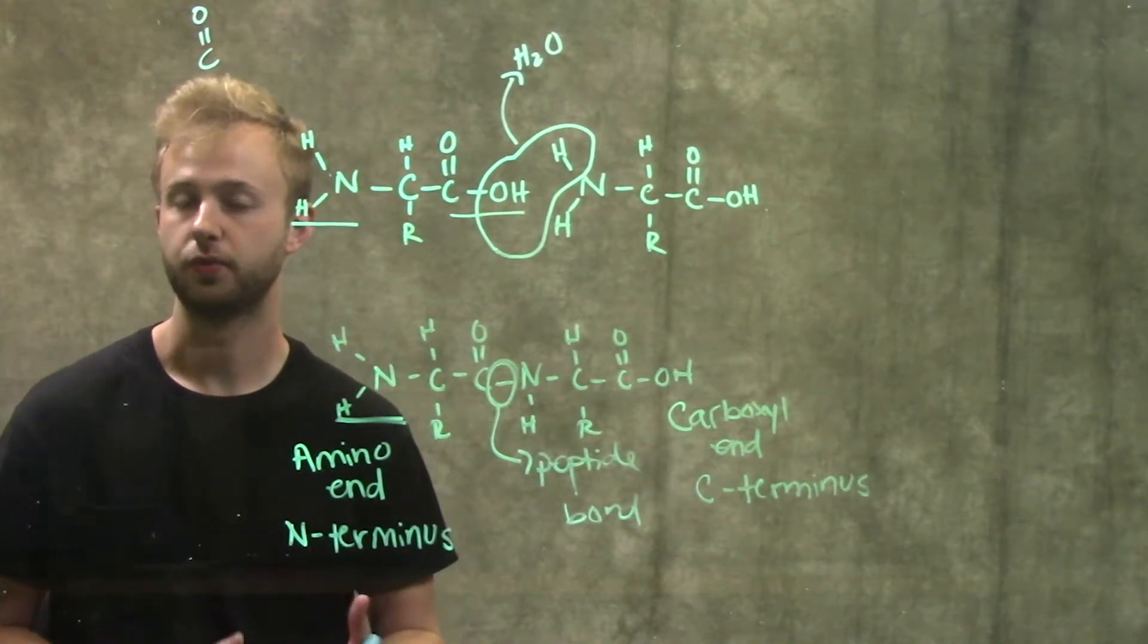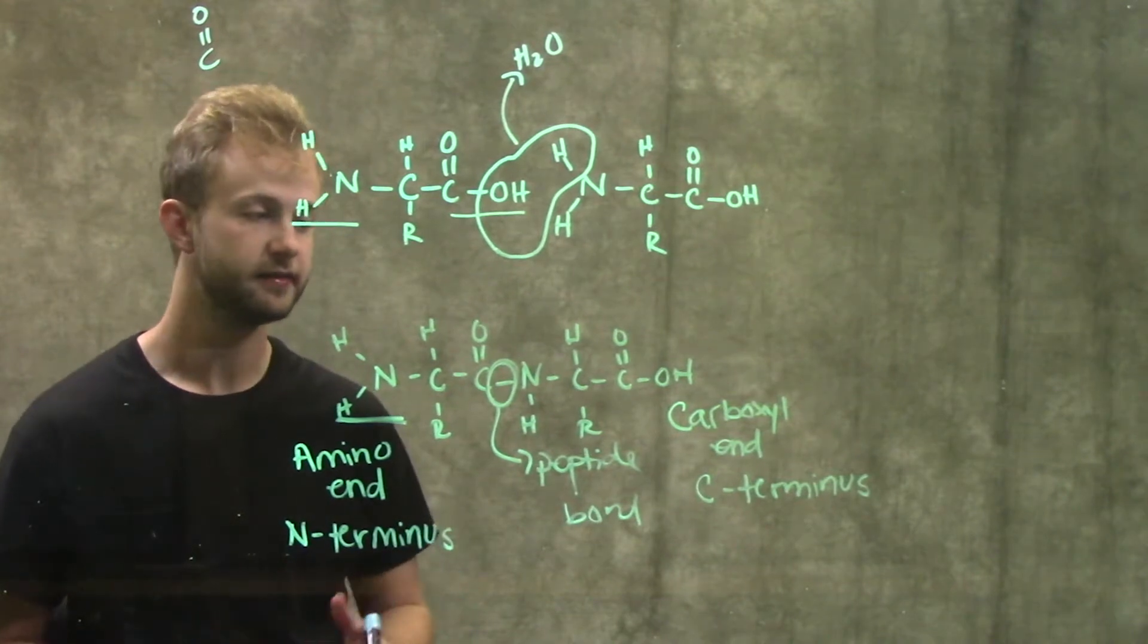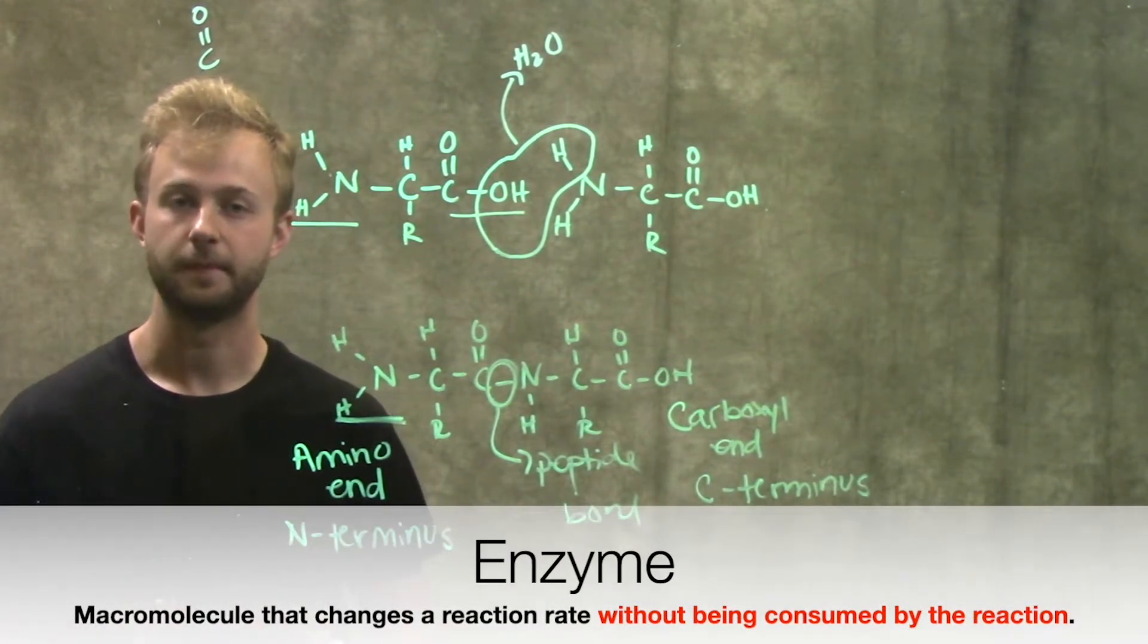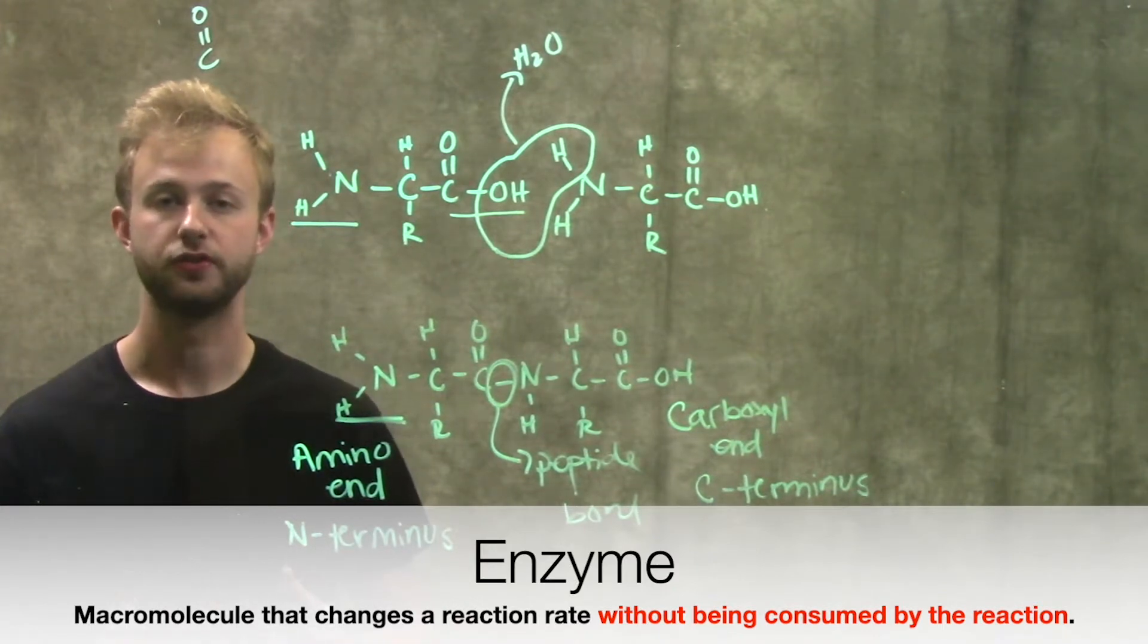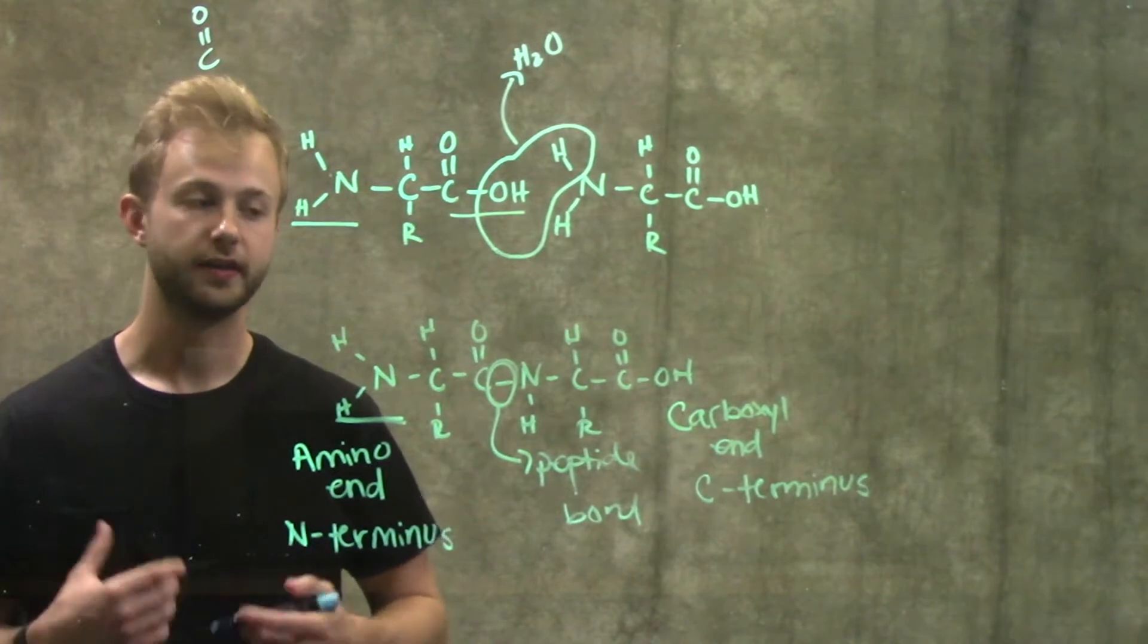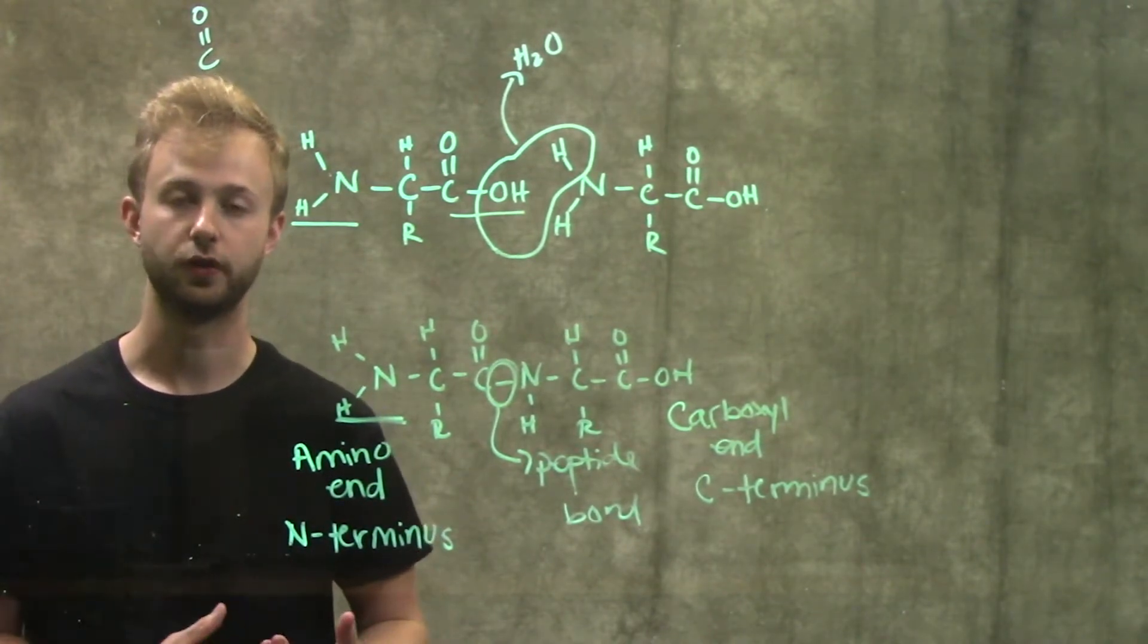Now that we know what proteins are generally, how they're made and what their structure typically is, we can look at a very important class of protein called enzymes. Enzymes are proteins that speed up chemical reactions, so our body can have these reactions taking place at a rate that's actually useful to our cells.